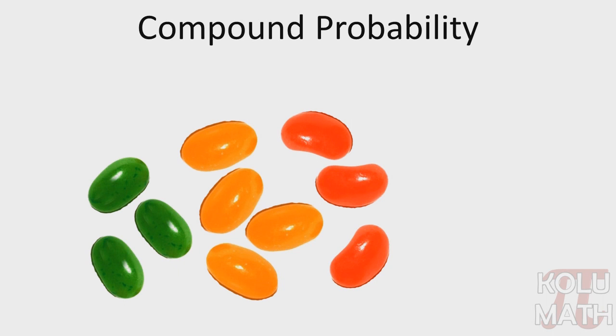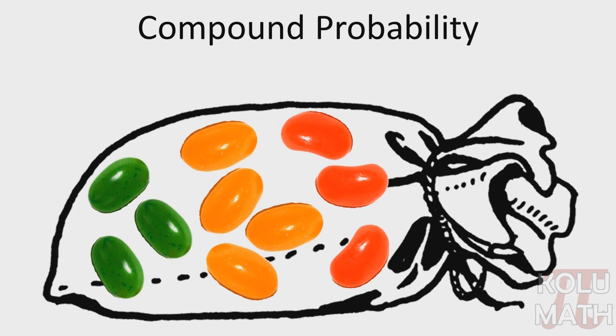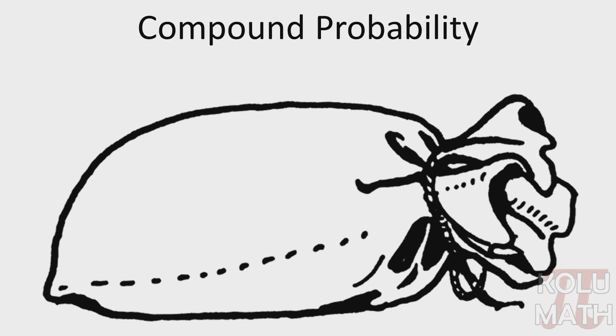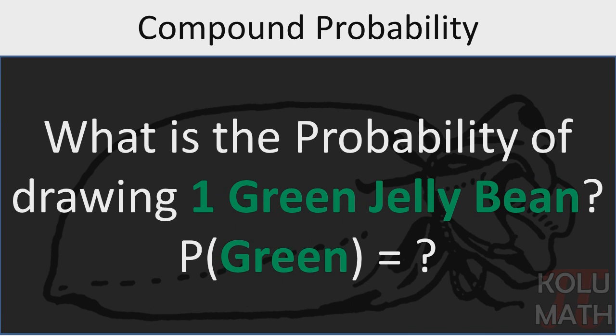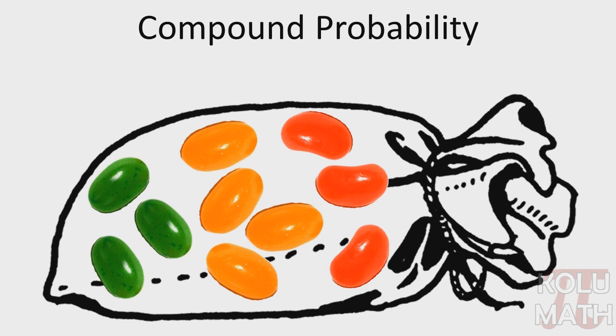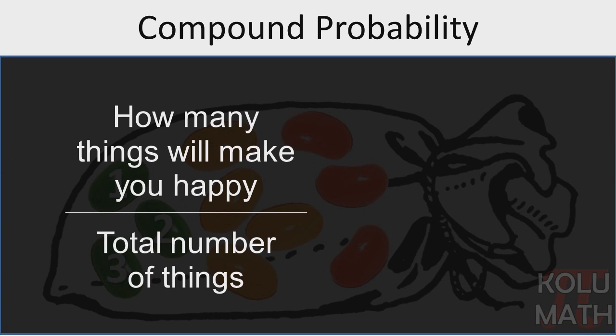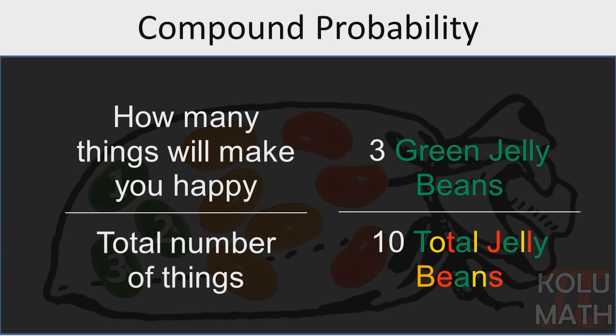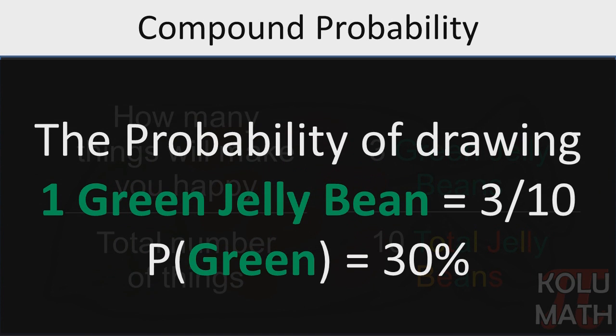So let's start with our candy beans over here and put them in a sack. Shake it up really good. Let's do a simple warm-up problem to get you going. Let's find out what the probability is of drawing one green jelly bean. We have three green jelly beans here. One, two, three. How many things will make you happy over total number of things? Three jelly beans would make us happy, and we have a total of ten jelly beans. Nice and easy. That gives us a probability of three over ten, or thirty percent.